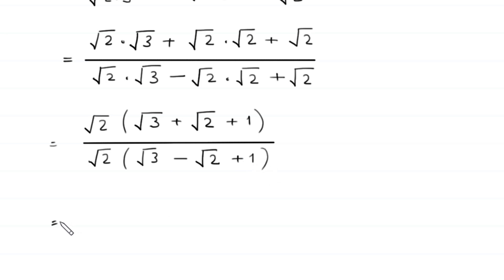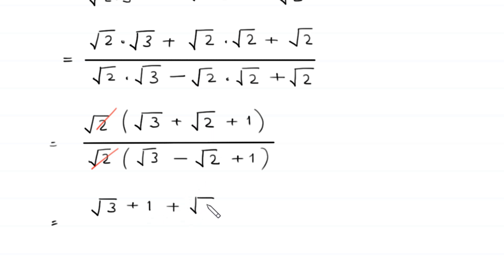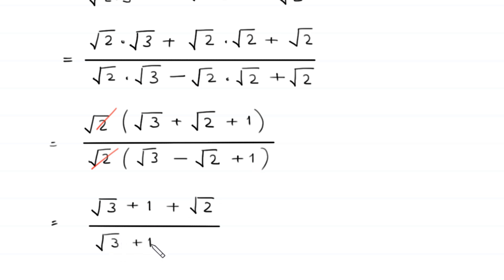Next, the square root of 2 in numerator and denominator will cancel out. The expression square root of 3 plus square root of 2 plus 1 can be rearranged as square root of 3 plus 1 plus square root of 2, and the denominator square root of 3 minus square root of 2 plus 1 can be written as square root of 3 plus 1 minus square root of 2.